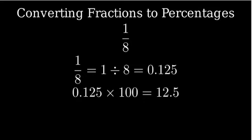Step 2: To convert our decimal to a percentage, we multiply it by 100. 0.125 times 100 equals 12.5.